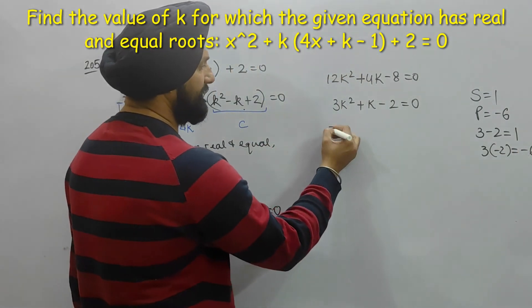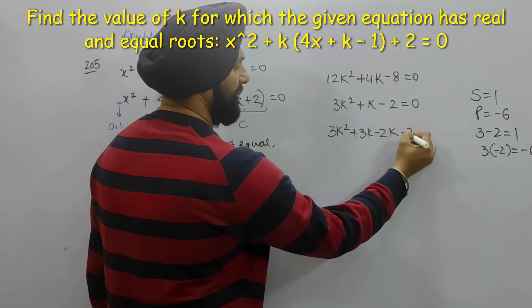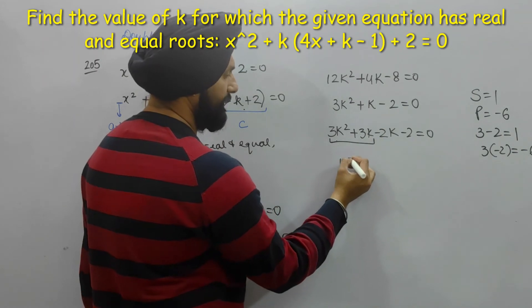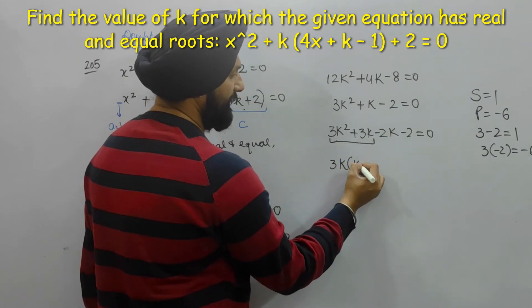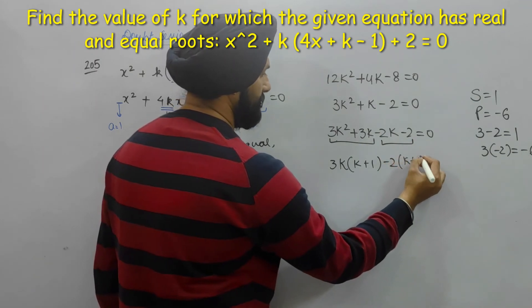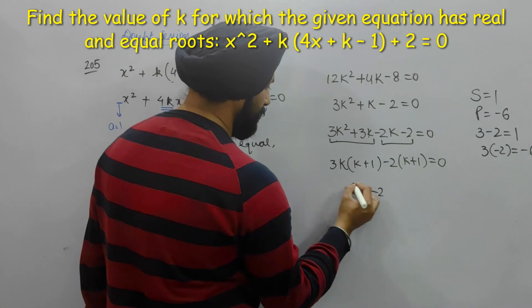So 3k square plus 3k minus 2k minus 2, what is the common here? 3k, also k plus 1, and k plus 1. So here the answer: 3k minus 2 into k plus 1 is equal to 0.